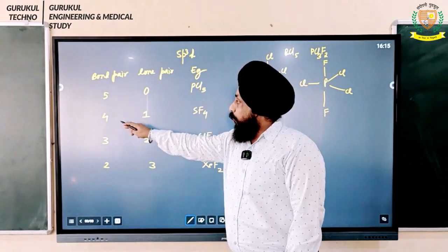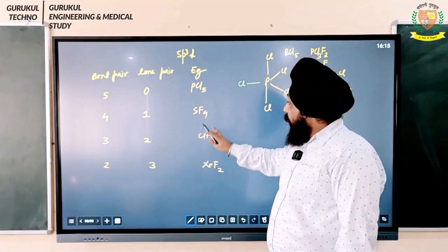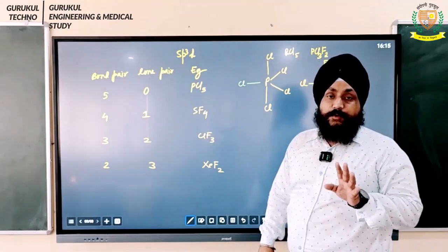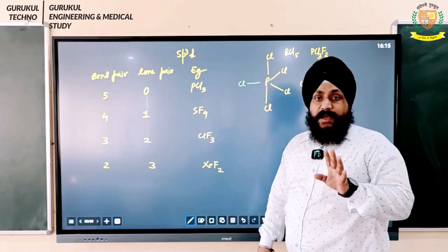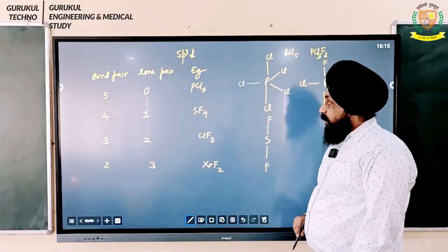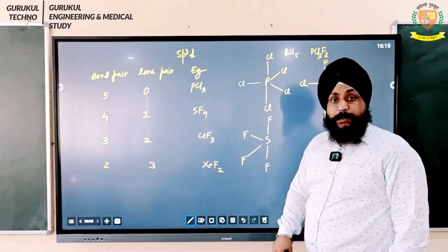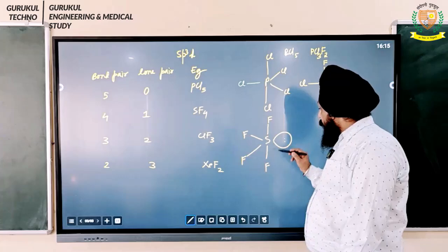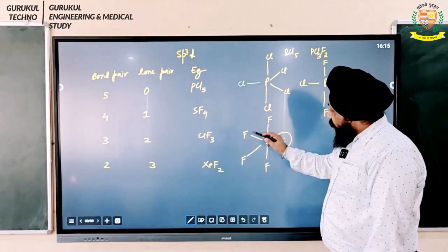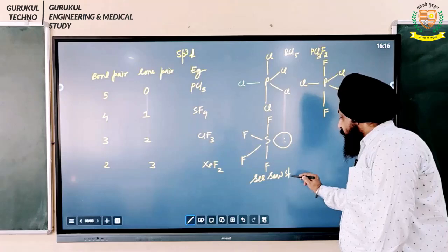The next case is four bond pairs and one lone pair, with sum equal to five, so hybridization is SP3D. This is the case for SF4. Here the lone pair occupies the equatorial position. The more electronegative fluorine atoms occupy the axial positions first, and the remaining fluorines go to equatorial positions. This geometry is called the seesaw shape.